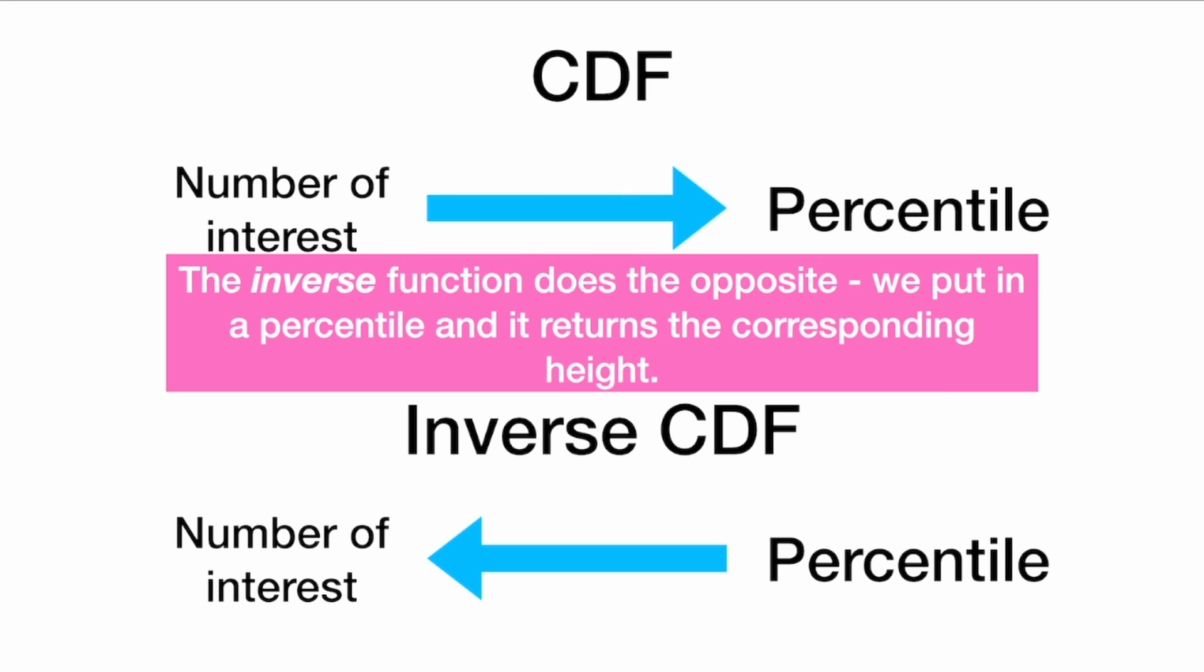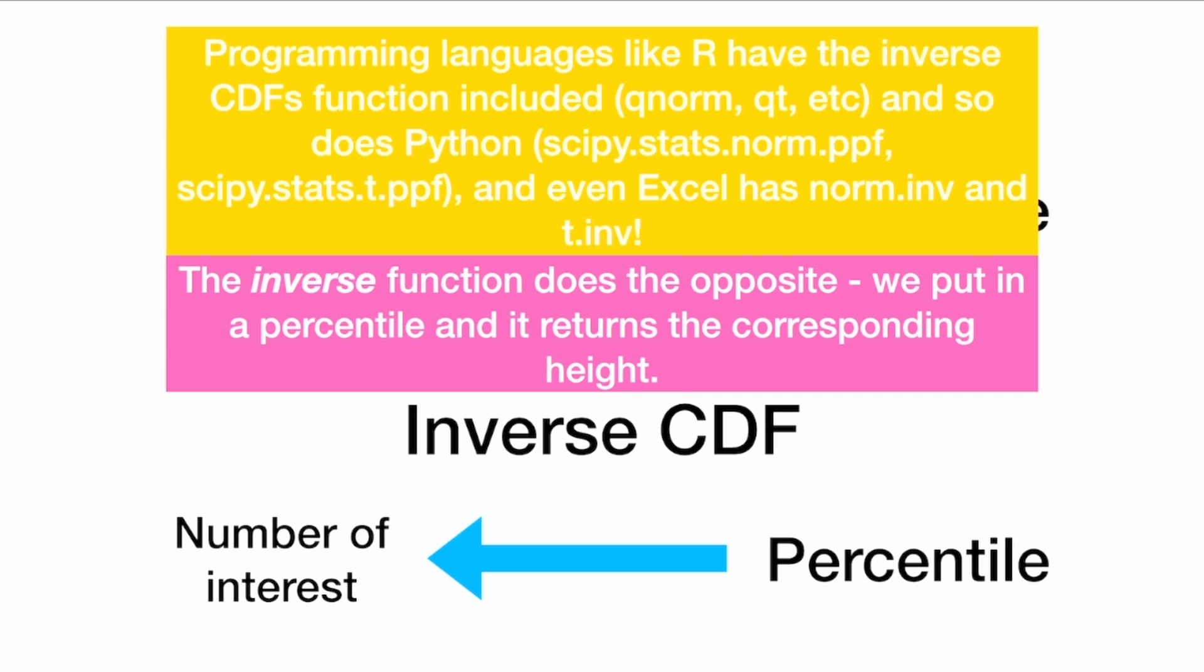Similarly, we have an inverse function that does the opposite. We put in a percentile, and it returns the corresponding height. And programming languages like R have the inverse CDF functions included. These are the Q functions, and Python has them in scipy.stats. They are the PPF functions, and even Excel has functions like norm inverse and T inverse.